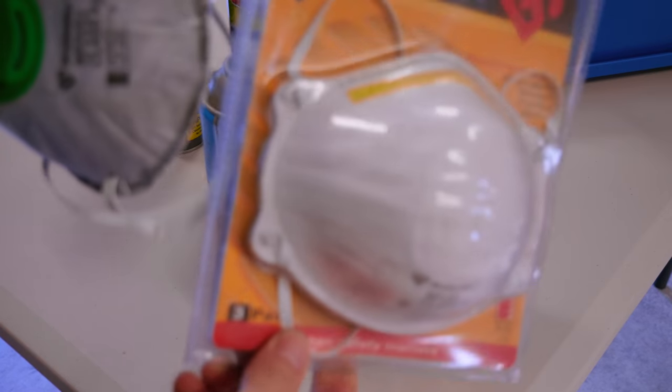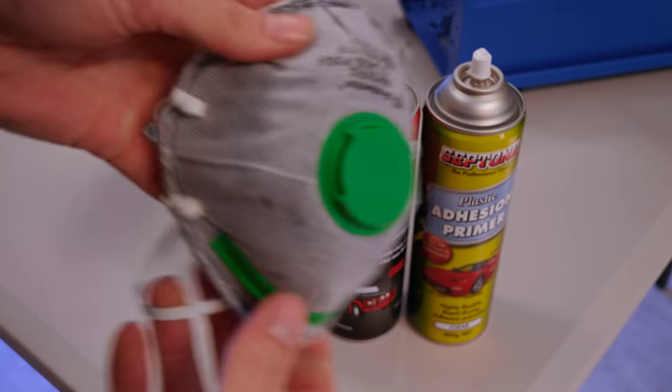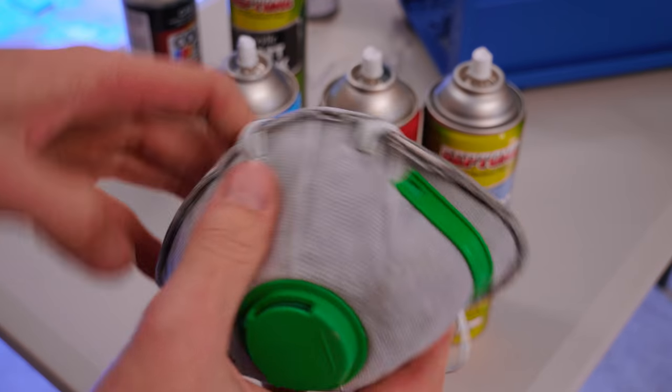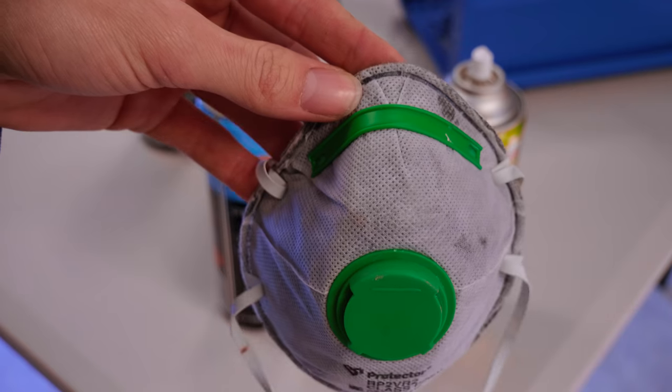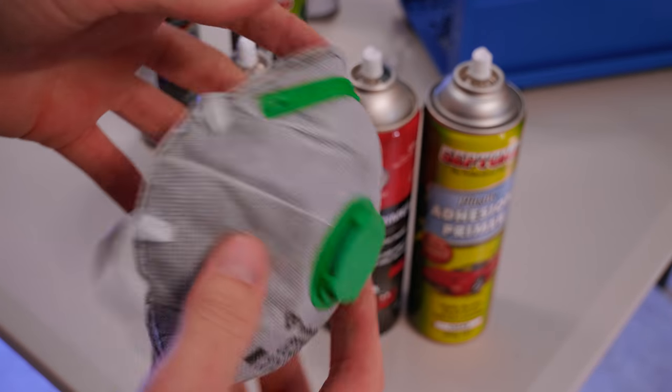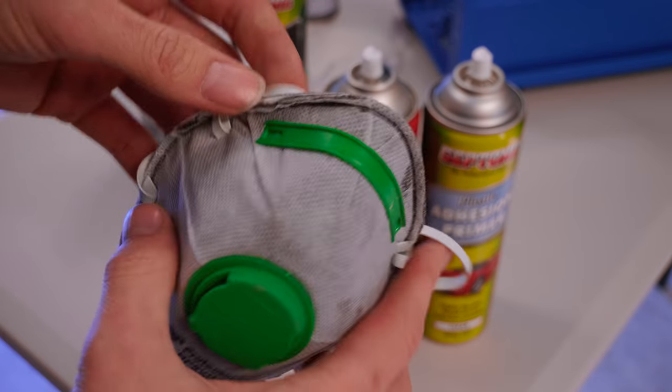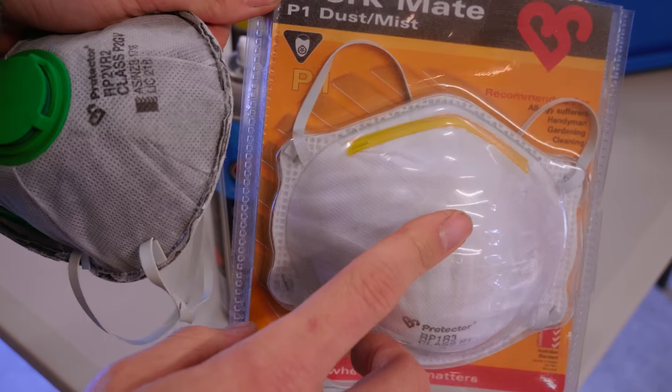Now, in terms of protecting ourselves, this is something a lot of people do forget, but we do all know that paint fumes and lungs, generally speaking, don't mix, so it's a good idea to grab yourself a proper set of masks. When it comes to paint fumes, you need something that is definitely rated for paint fumes, like what we're using today, or a proper respirator or air system is definitely mandatory when spraying in a small confined area.